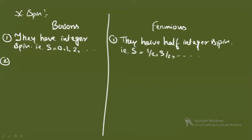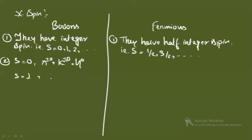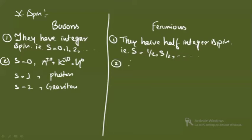Examples of bosons: for spin-0 particles we have pions, kaons, and eta. Spin-1 particles include the photon. In the last video we saw that gravitons have spin-2 — they are exchange particles in gravitational interaction — so graviton is also a boson.